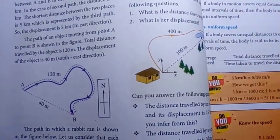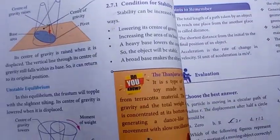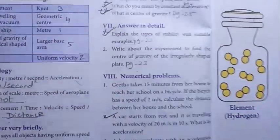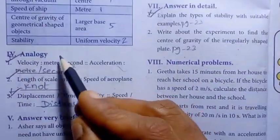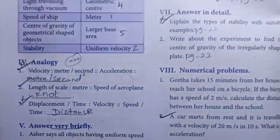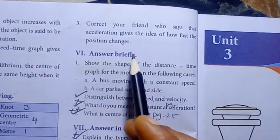Then Unit 2, Force and Motion. This is physics. Page number 25. See one marks full. See two marks compulsory. Answer very briefly, give reason, answer briefly.